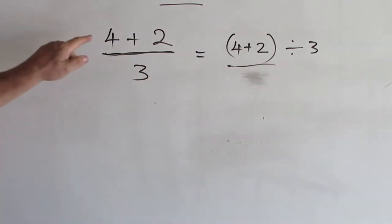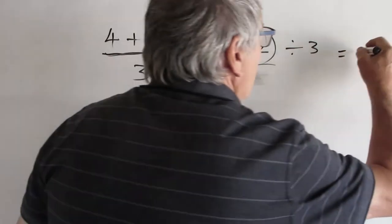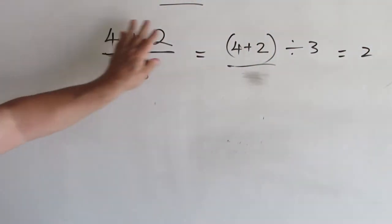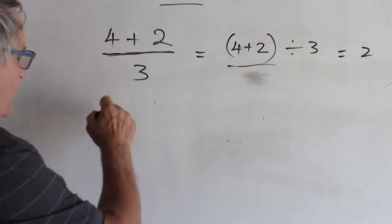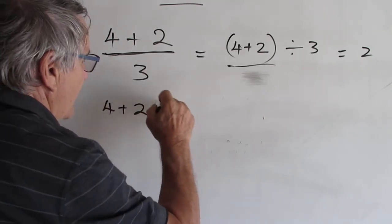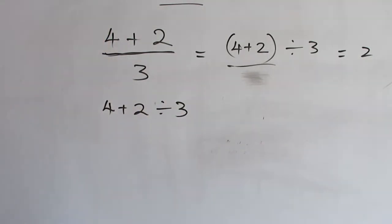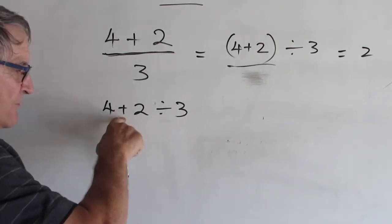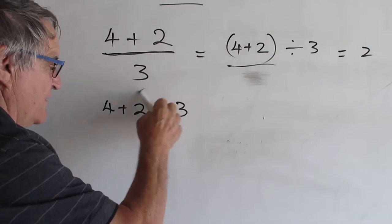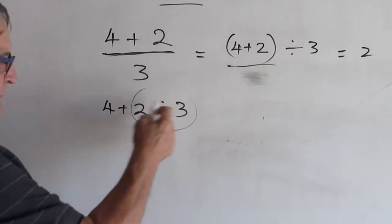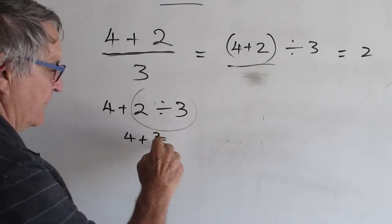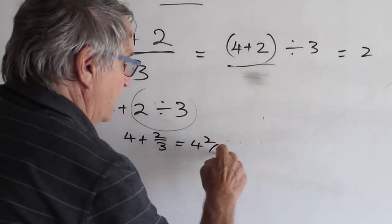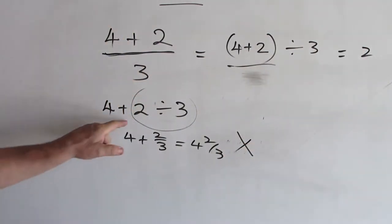And then we get our answer, which as everyone will know, 4 plus 2 is 6, 6 divided by 3 is 2. If you put this in the calculator as you say it, you would put in 4 plus 2 divided by 3. In the calculator, because multiplication and division comes before addition, you would be doing this first. So you'd have 4 plus 2 thirds, which is 4 and 2 thirds. Not 2. Wrong.